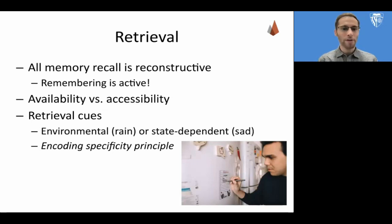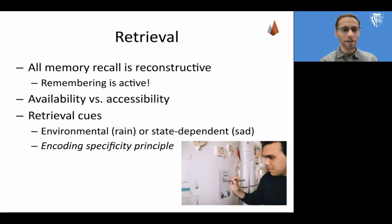Available memories are the ones that have been encoded and stored, but not necessarily accessible to us all the time. You may forget something today, but then remember it tomorrow — that shows something is available in your memory but not immediately accessible. A good example of this would be the tip of the tongue phenomenon, where you kind of know that you remember it, but you can't actually recall it in the moment. Retrieval cues are sometimes environmental and sometimes state dependent. For example, if you're trying to remember something you learned while it was raining out, you're more likely to remember it on a rainy day. You're also more likely to remember something you learned while sad if you're actually feeling sad now. This is sometimes referred to as the encoding specificity principle — about how retrieval ability is guided by encoding processes.